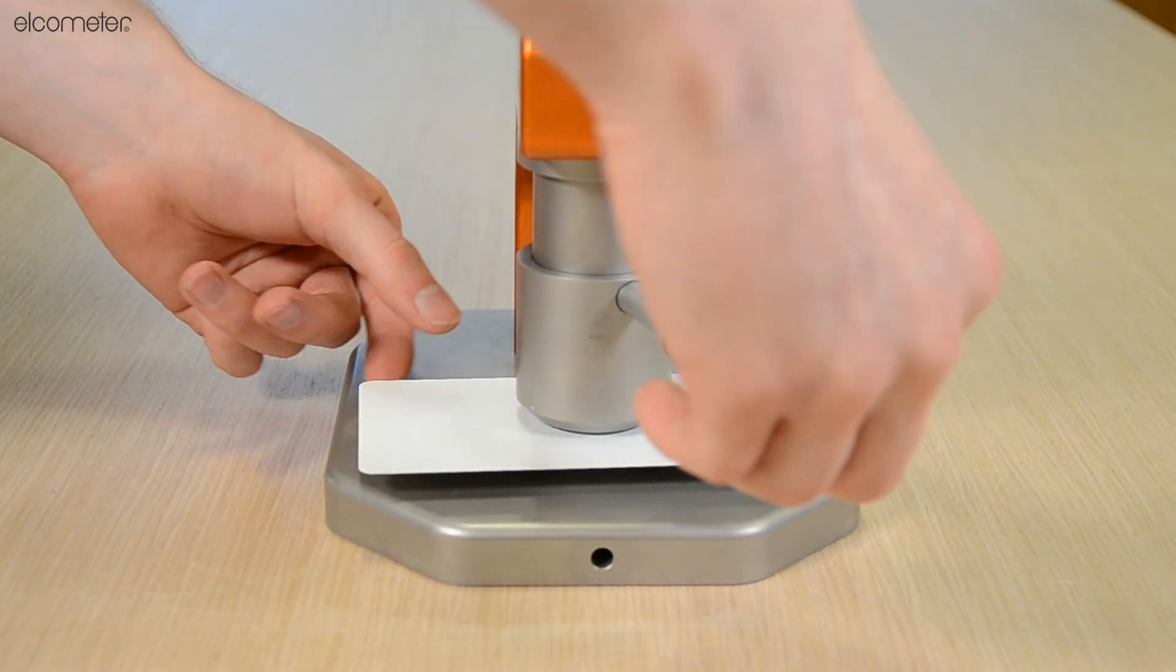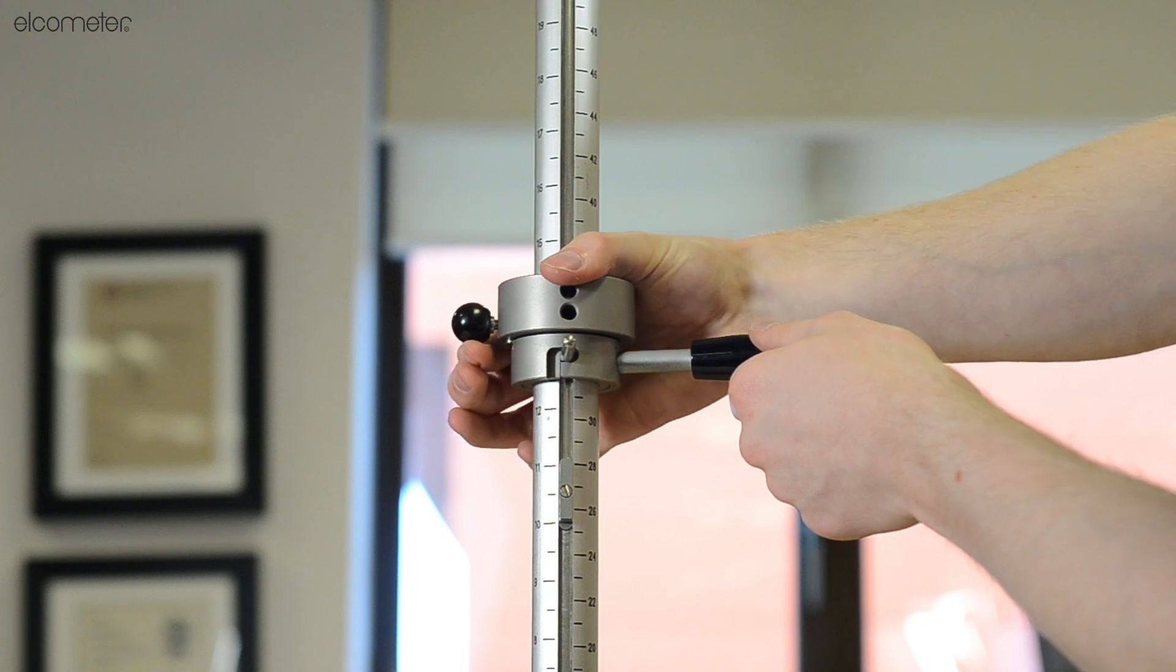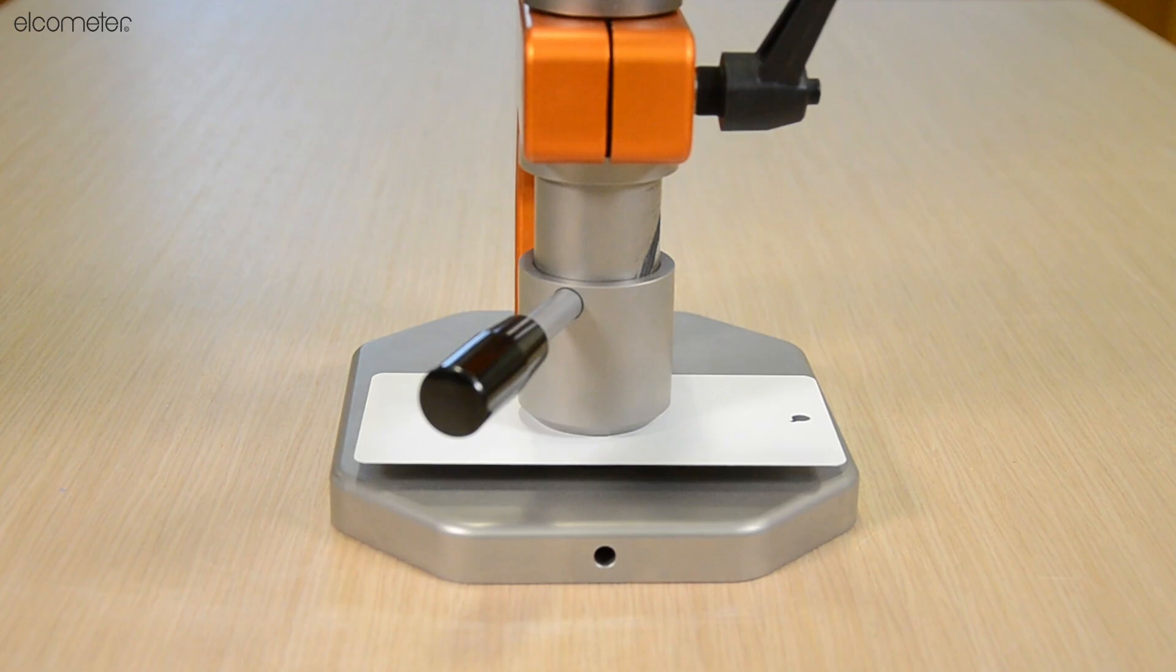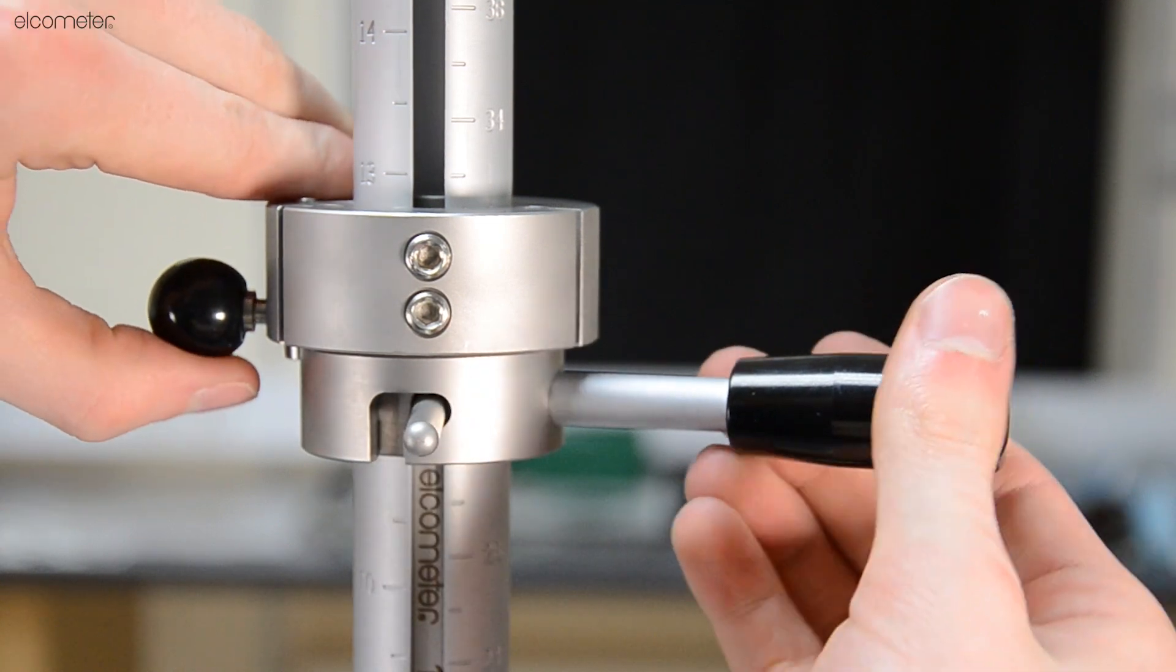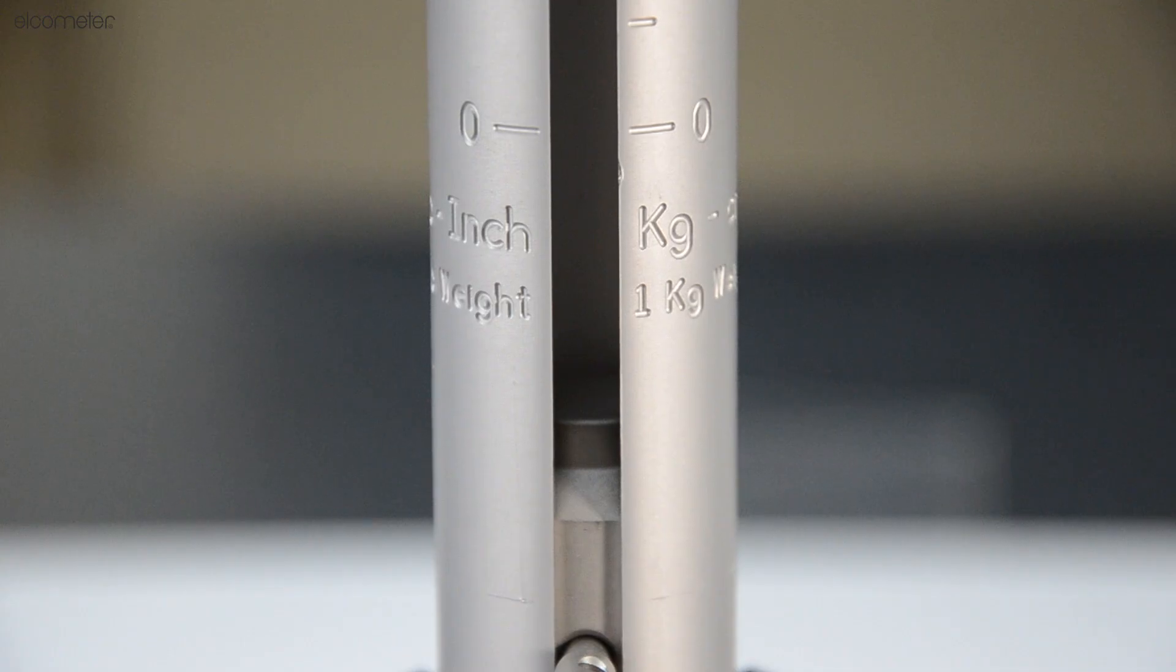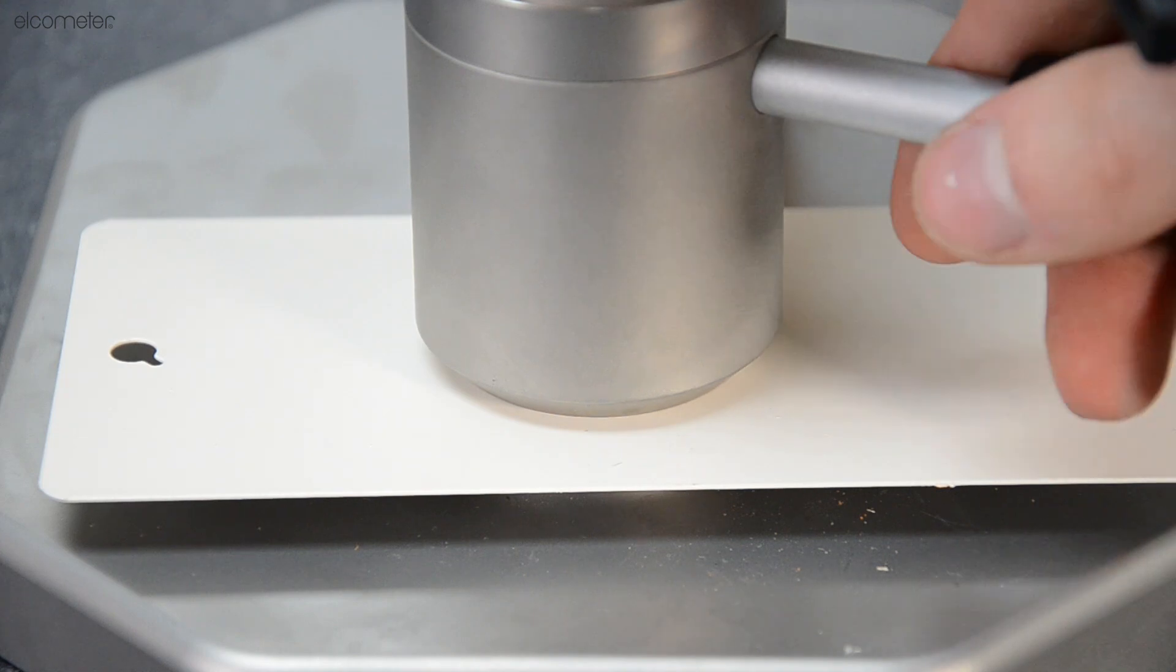A direct test consists of a weight with a hemispherical punch falling directly onto your sample, whereas an indirect test consists of a weight falling onto an indenter which is resting on the sample.